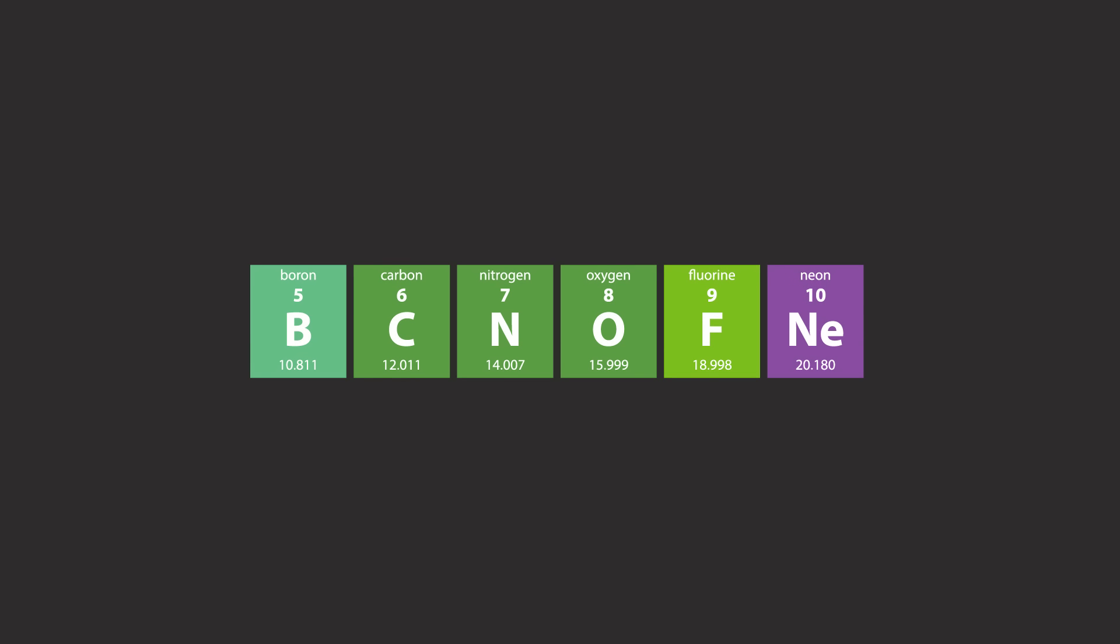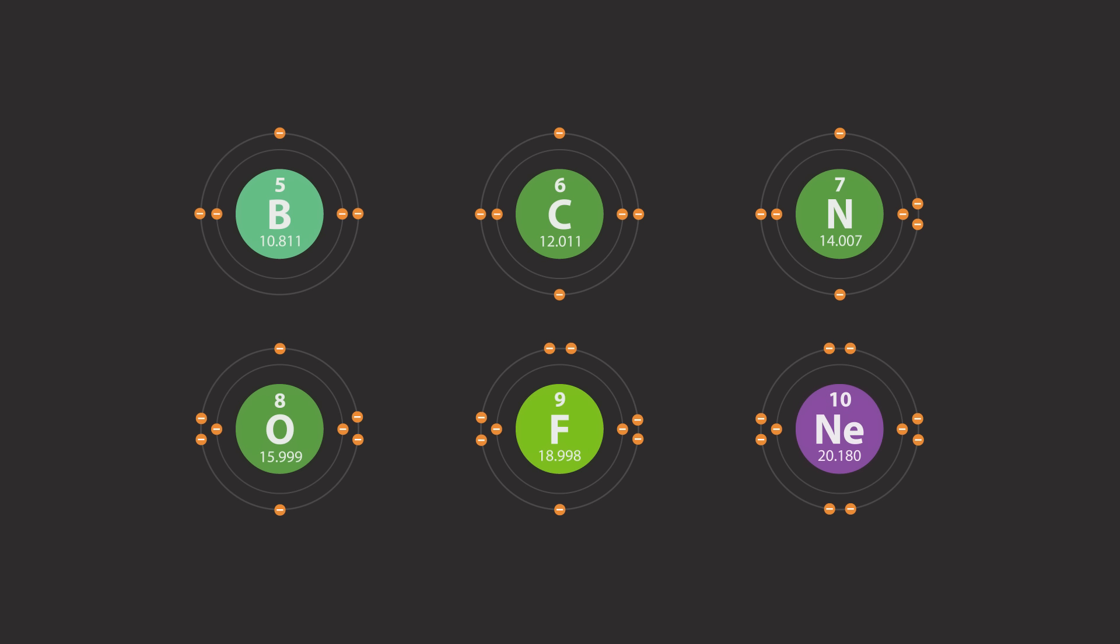Now let's compare to what you've drawn. Notice that the atoms for all elements in the second period have two electron shells. You will also notice that the number of valence electrons, that is the electrons occupying the outermost shell, correspond to the group number.